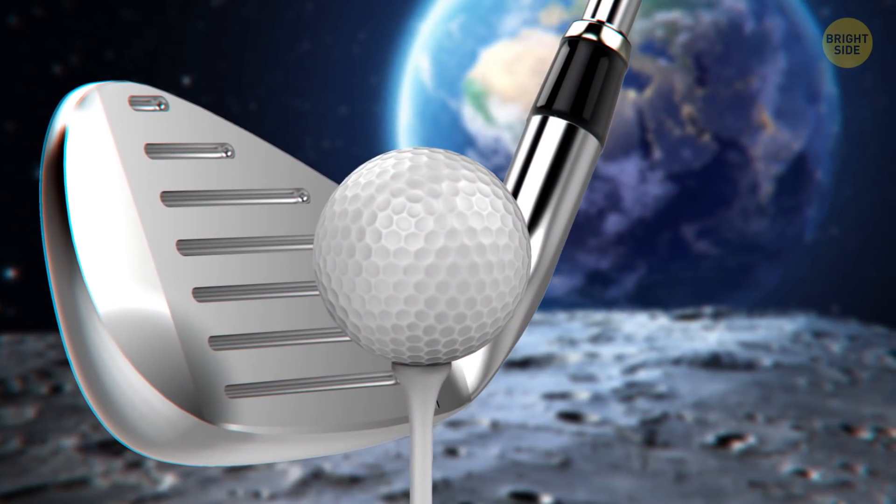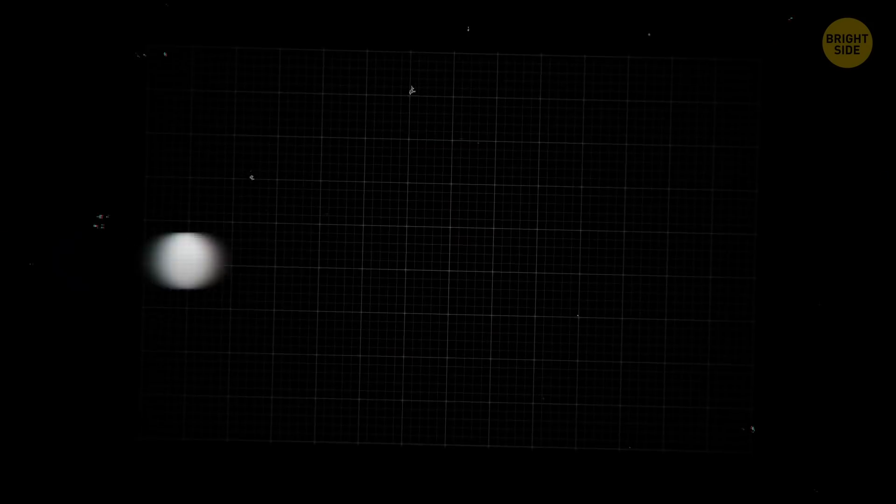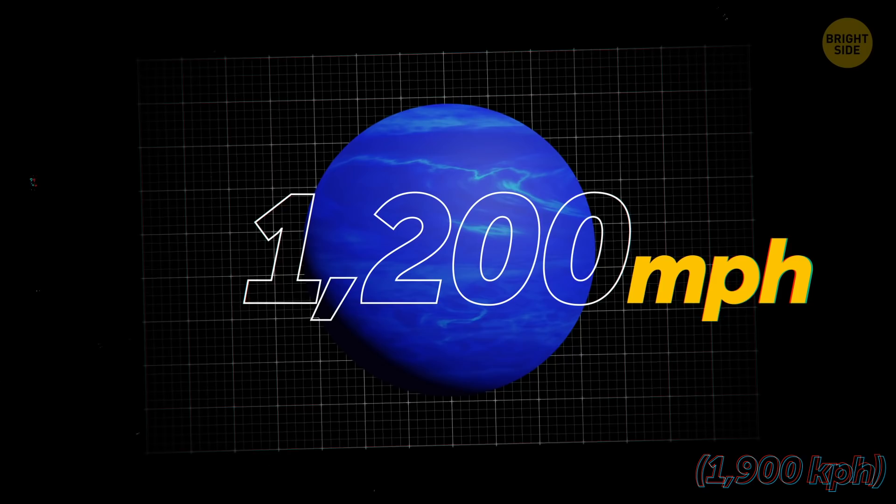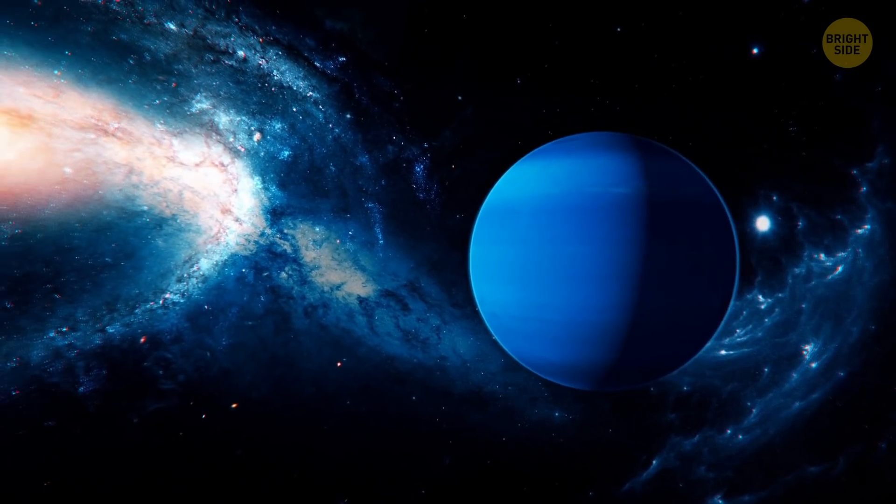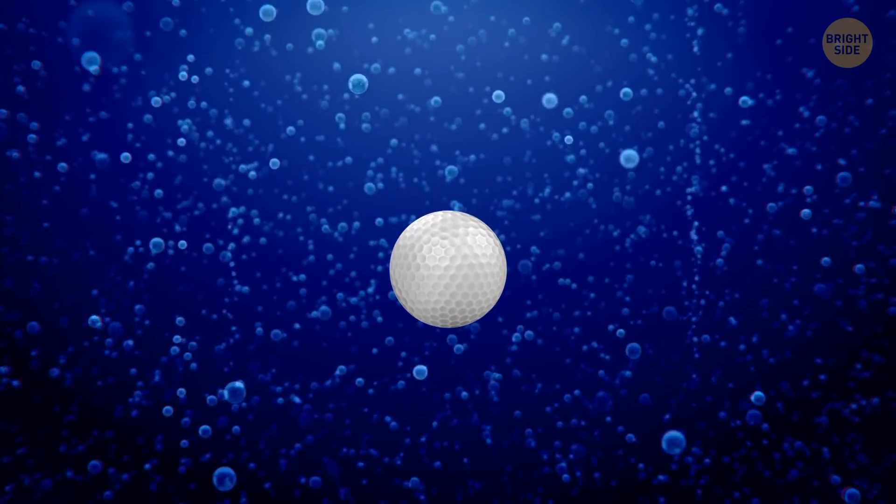Golfing on the Moon would be fun. Your ball would fly for miles before the Moon's weak gravity brought it back down. Better not try teeing off on Neptune. Methane winds blow 1,200 miles per hour, almost twice the speed of sound. Plus, there are no signs of a surface to make holes in, so a golf course would be more like a golf pool.